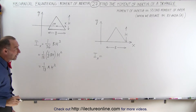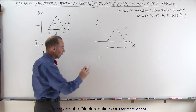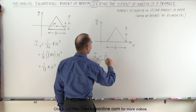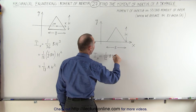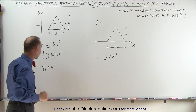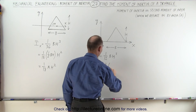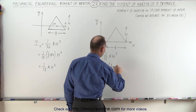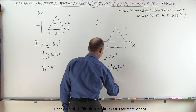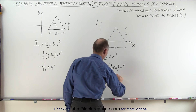Now, if the base is on top of the x-axis — the axis relative to which we're trying to find the moment of inertia — then we can see that this is going to be equal to 1/12th the base times the height cubed. Again, realizing that the area of a triangle is 1 half the base times the height, this can be written as 1 over 6 times 1 half the base times the height times h squared, and this is therefore equal to 1/6th the area of the triangle times h squared.